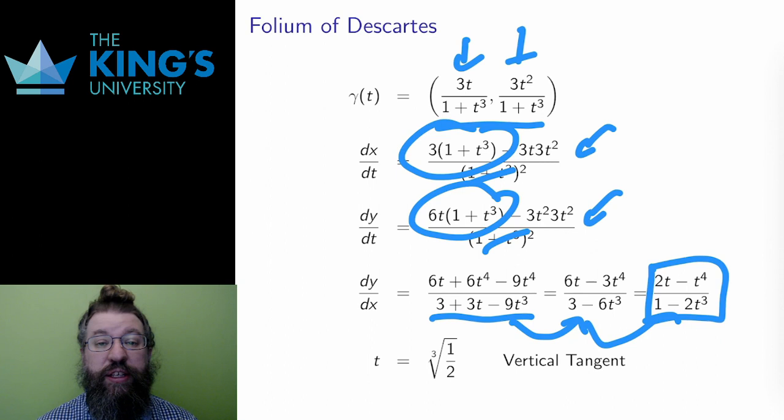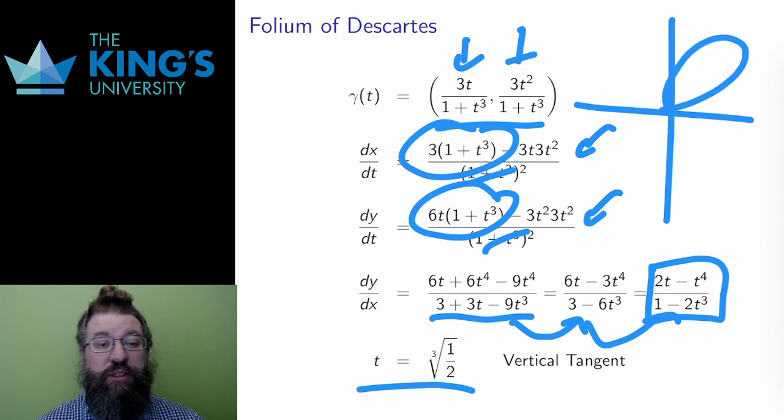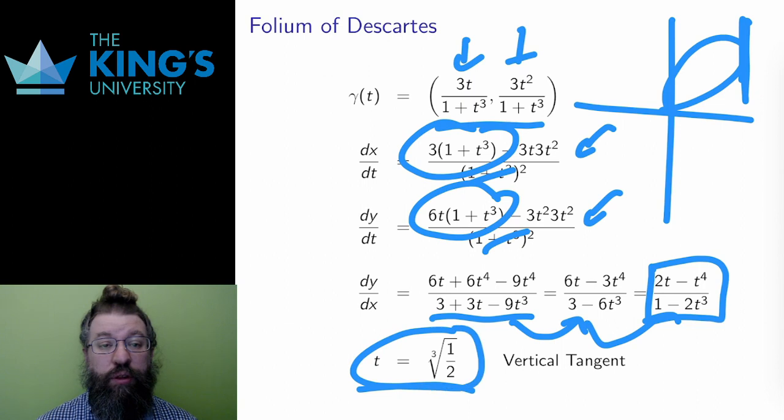This is undefined when t is the cube root of 1/2. In the graph in the previous slide, there was one point on the outside of the loop where there was a vertical tangent. This point happens exactly at time equal to the cube root of 1/2.